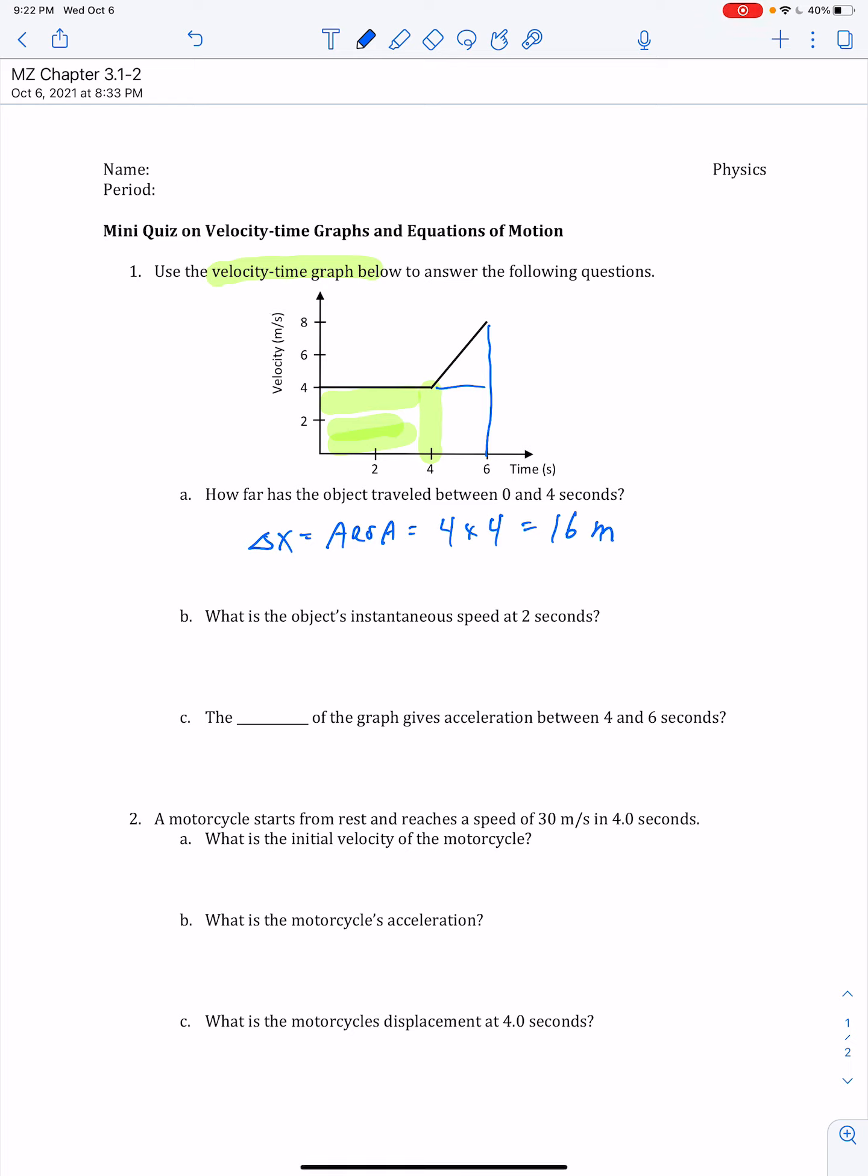So just remember, anytime we have a velocity time graph, when we ask you to find how far an object has traveled, that's asking for the displacement. Find the area underneath the graph.